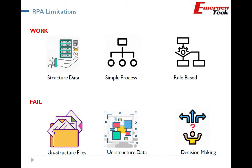Number 4: Where RPA fails — when you have unstructured data or unstructured files, it could be an invoice, a legal document, a rent agreement, or any text or Word file with large amounts of text or paragraphs, RPA will fail there. Number 2 is decision making: unstructured data requires human cognitive ability to make decisions, and that's where the biggest gap is — RPA fails.